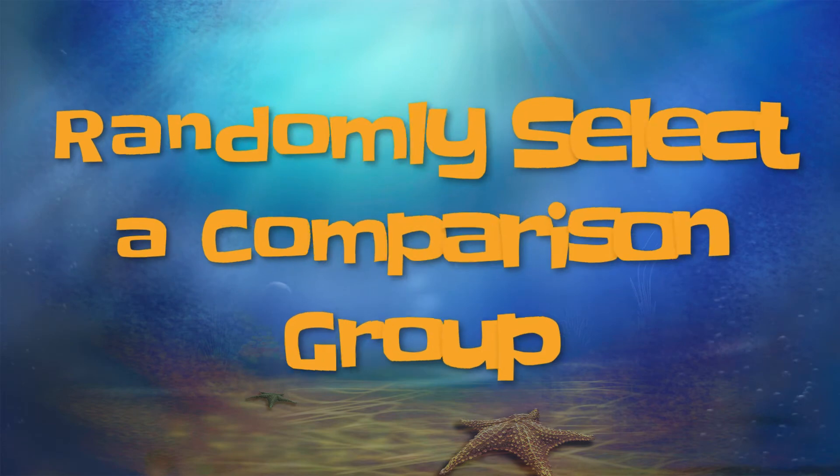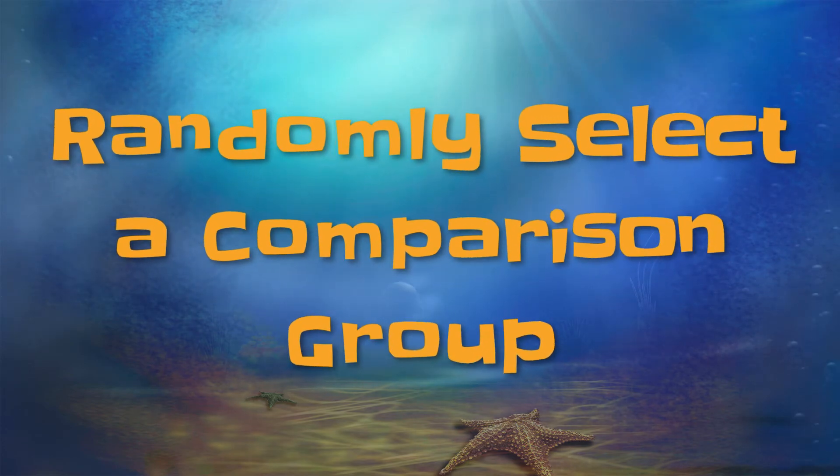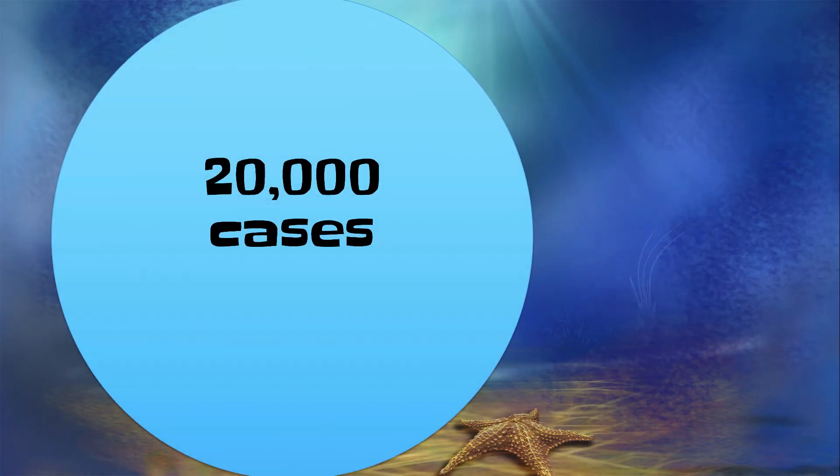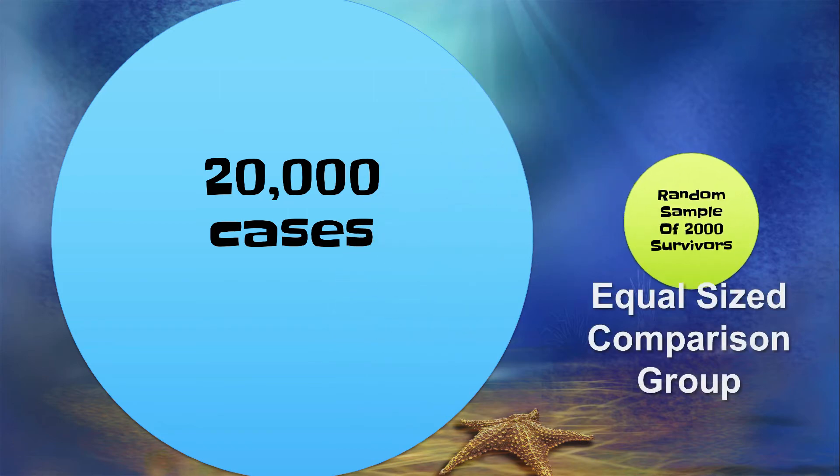Your third option, if the problem is unequal sample size, but you have plenty of cases, is to randomly sample the larger group to get an equally sized comparison group. In another video, I show you a data set with 20,000 cases, 10% of whom died. We randomly select an equally sized group from among those who survived.